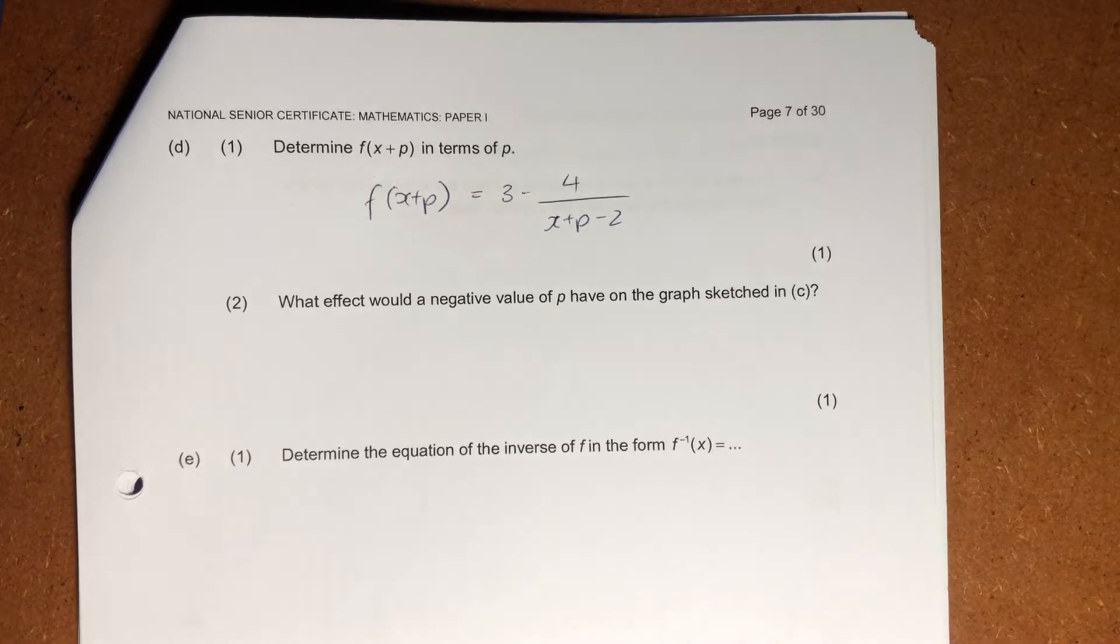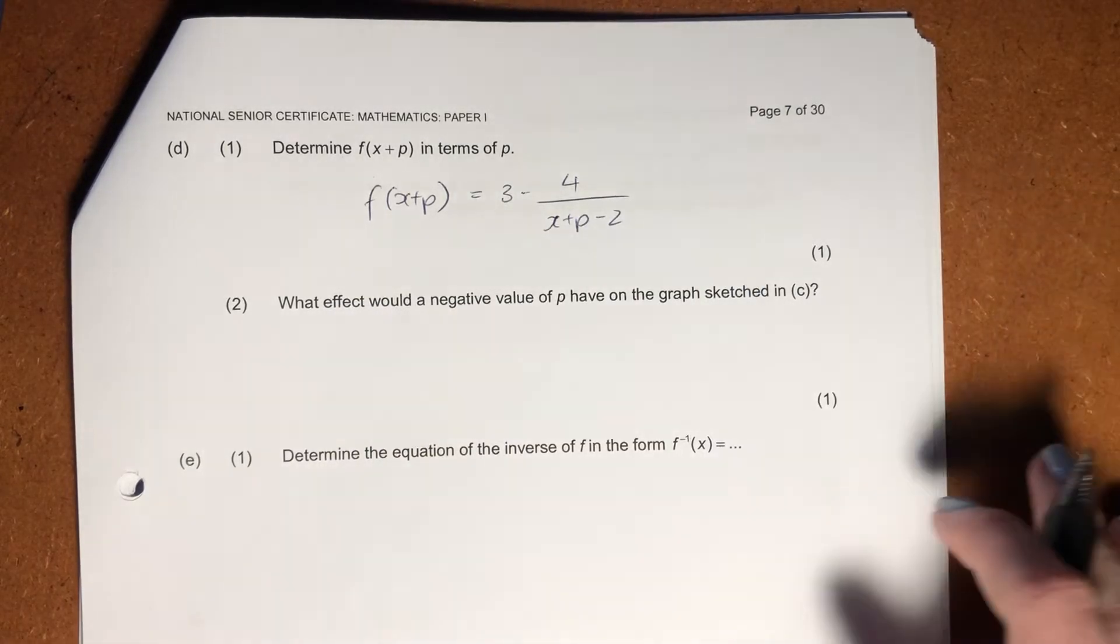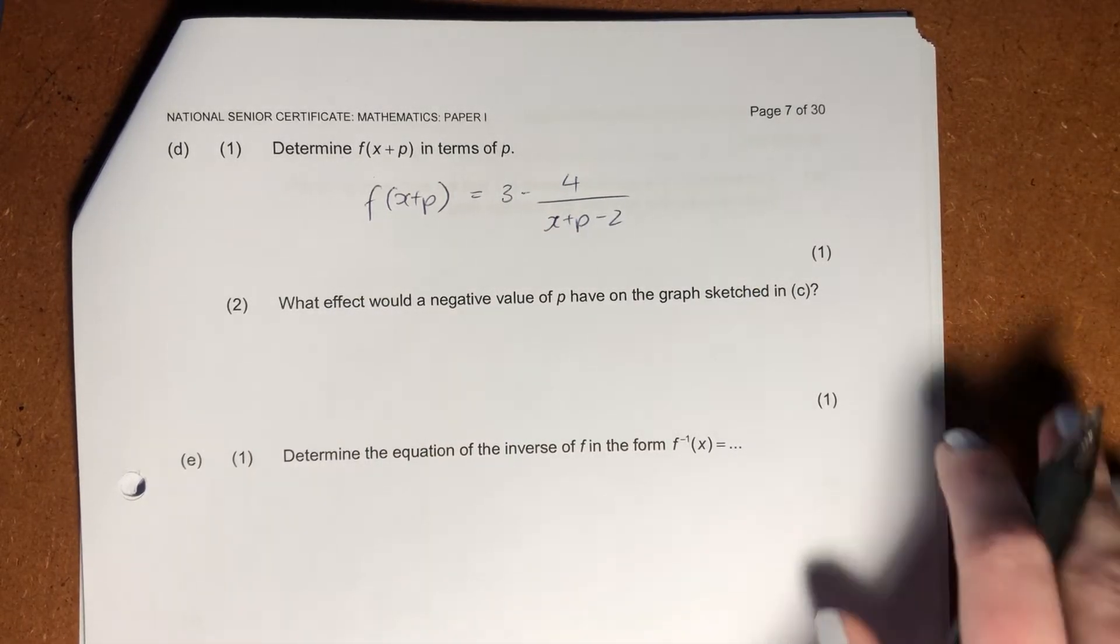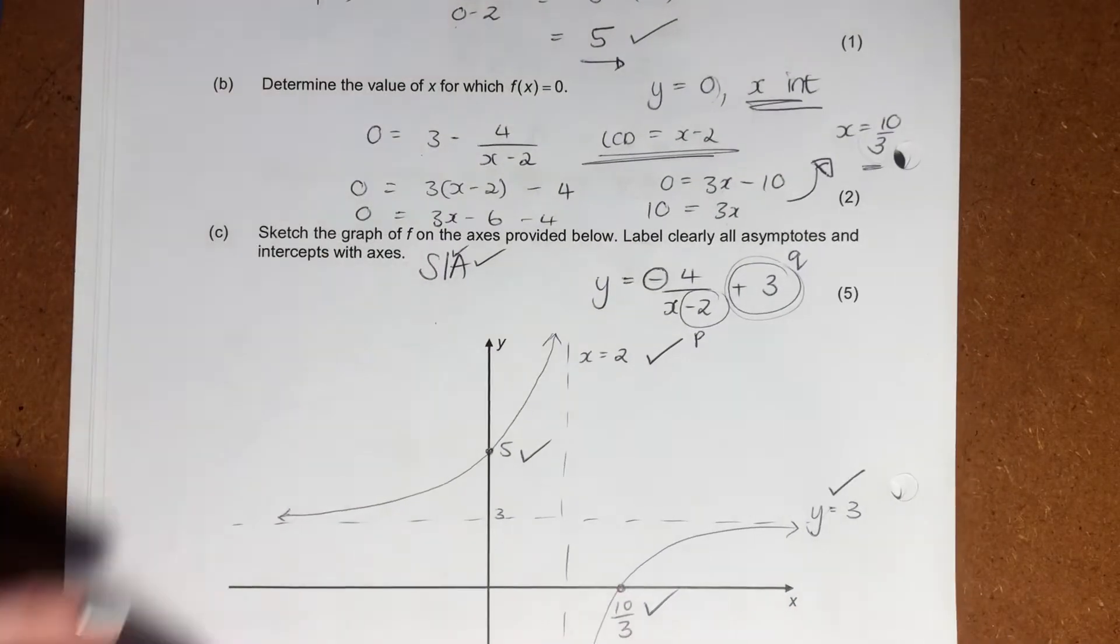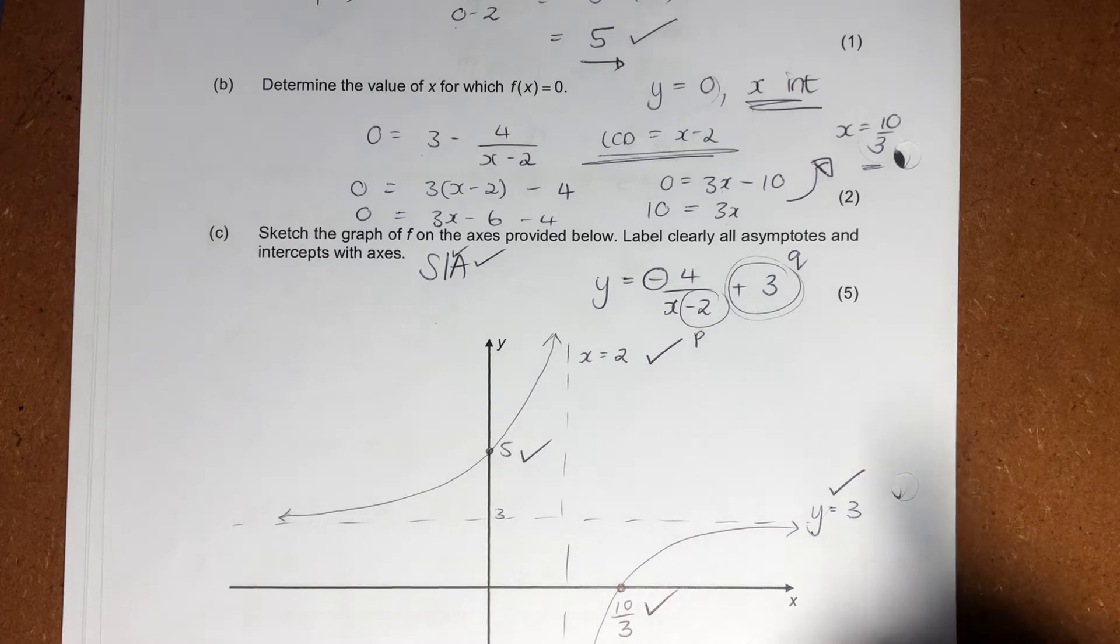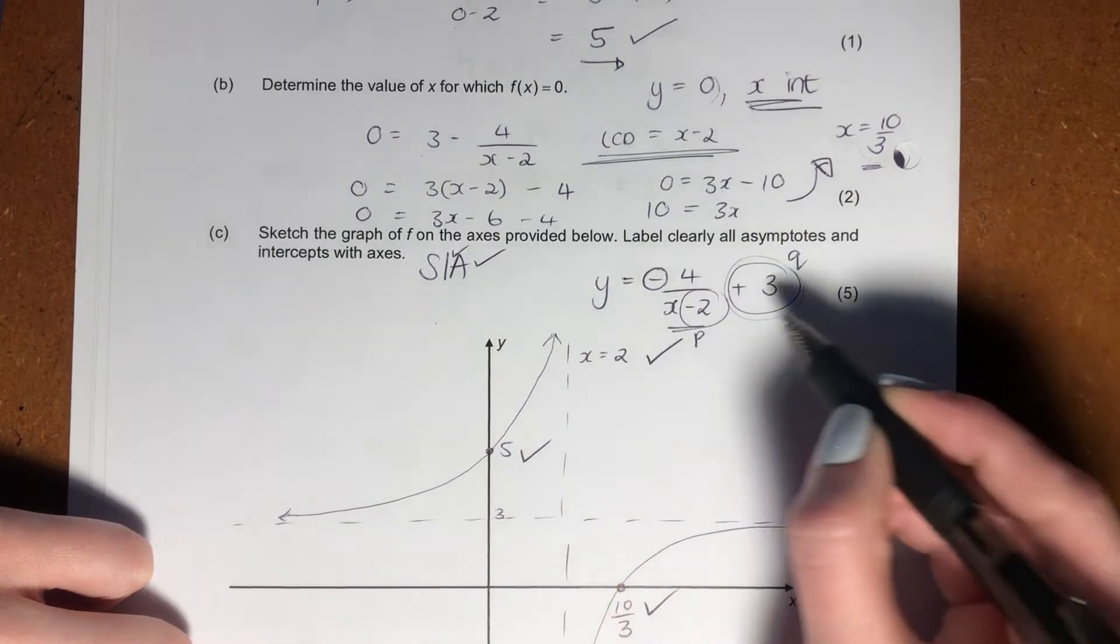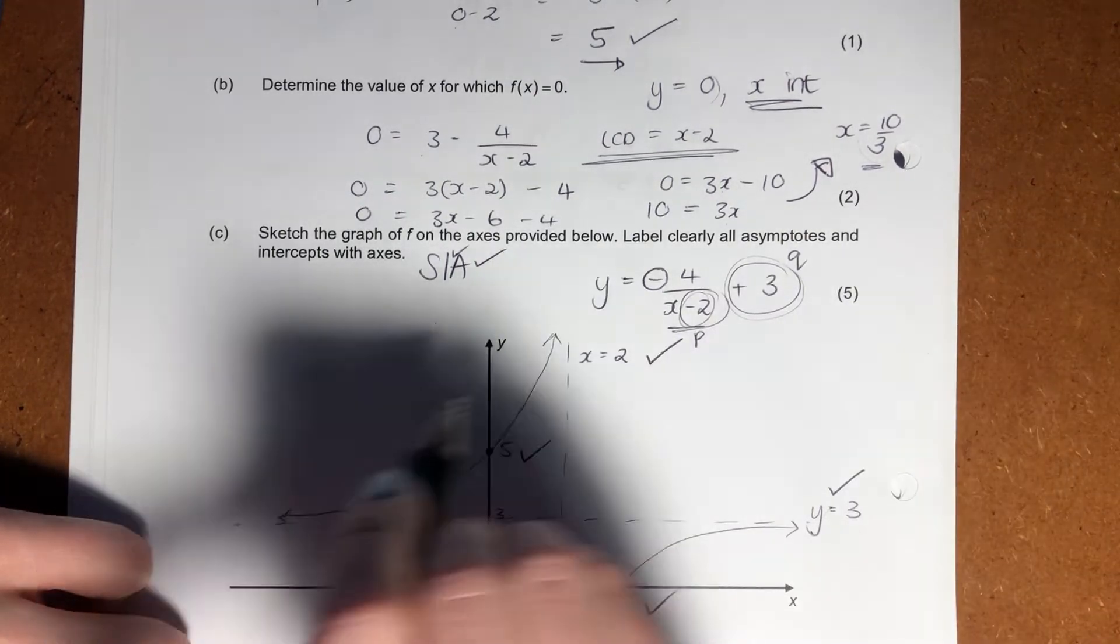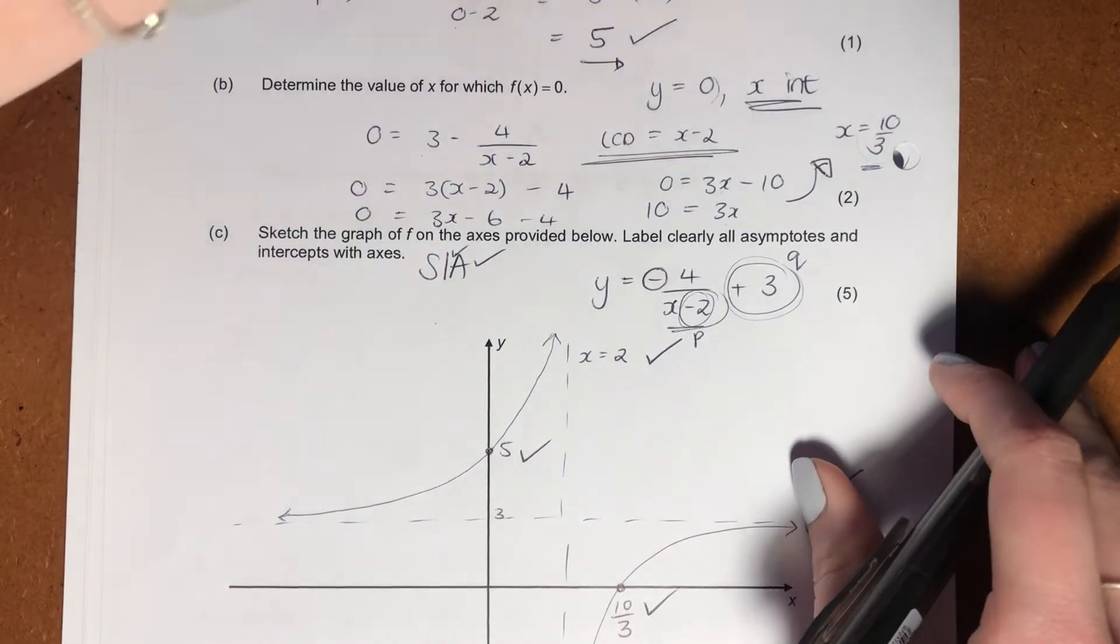Then it says, what effect would a negative value of p have on the graph sketched in C? So let's look here. We know that a negative value of p, it would mean that we shift. We're shifting our graph. That's what p means. So we know that when it's negative, it shifts to the right. When it's positive, it shifts to the left.